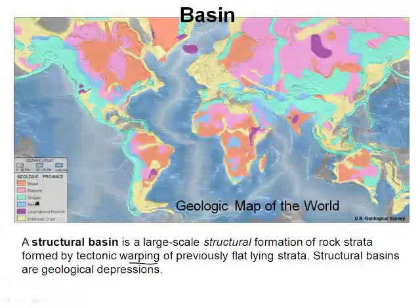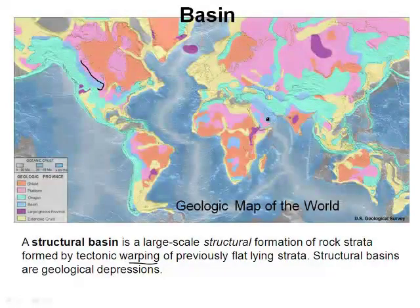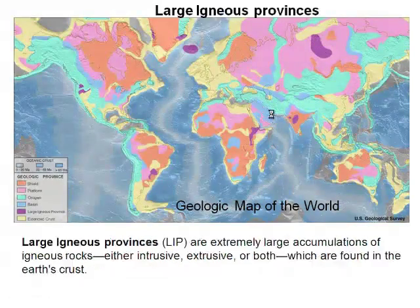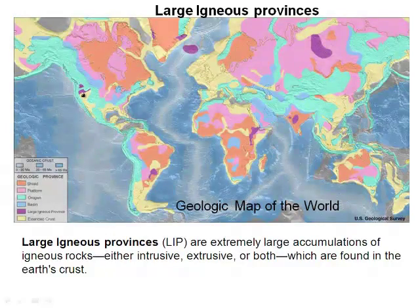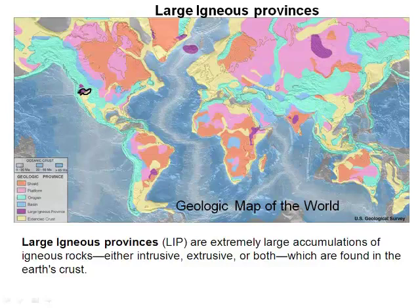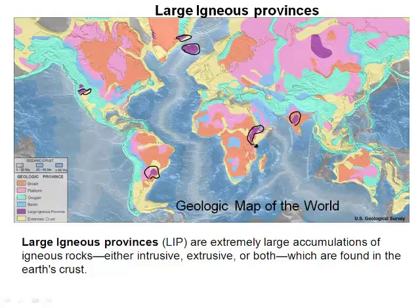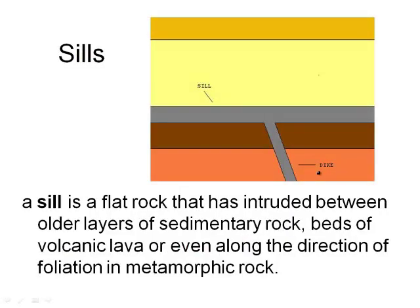And then the basin — a basin is a structural formation caused by warping. The basin is shown as a darker blue on the map, and you can also see it in Saudi Arabia. These are the underlying rocks at the base of those portions of the continents. And then the large igneous provinces: there aren't too many of these — just huge igneous rock formations. You get Iceland, parts of Greenland, down here in South America — very few places with these big igneous intrusions. This here is the Rift Valley of Africa.